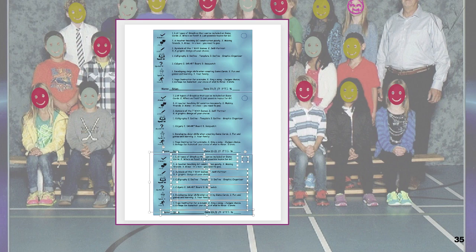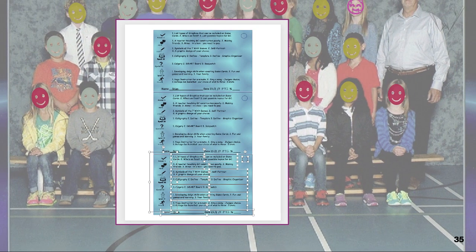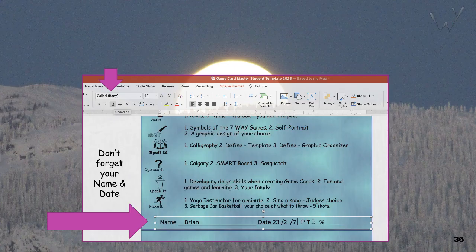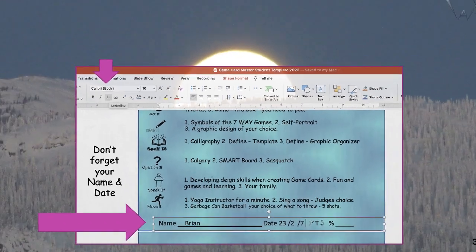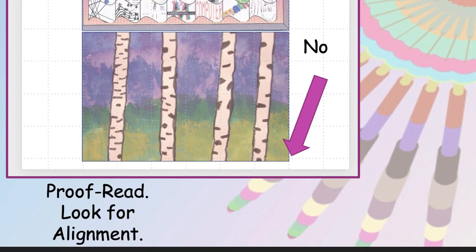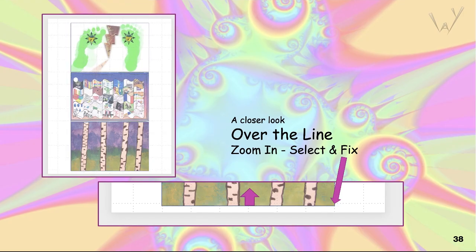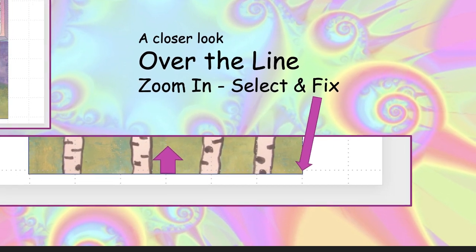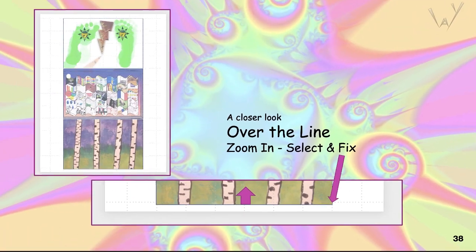Here we see the third group of text boxes being moved into position. Balance their position on the card before you deselect the boxes. Students lose marks when they forget their name — this wastes time. Check to see if the templates have moved; if so, fix it. Here's a close-up of what over-the-line means: select the rectangle and adjust to align with the grid lines.